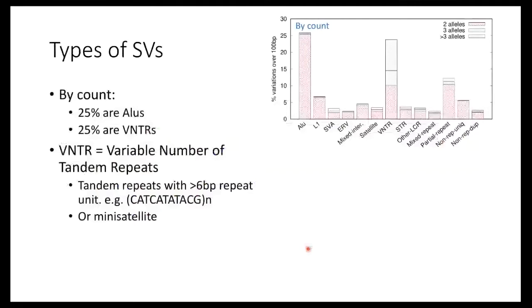The next question is: how many of these complex variants are there? Here is the classification of structural variations by count — we count each structural variation as one, regardless of whether it is 1 base pair or 10,000 base pairs. On the x-axis you can see the repeat classes: ALU, L1, VNTR, STR, etc. By count, about a quarter of structural variations are ALU insertions, which are about 320 base pairs and are now visible in the human reference genome.